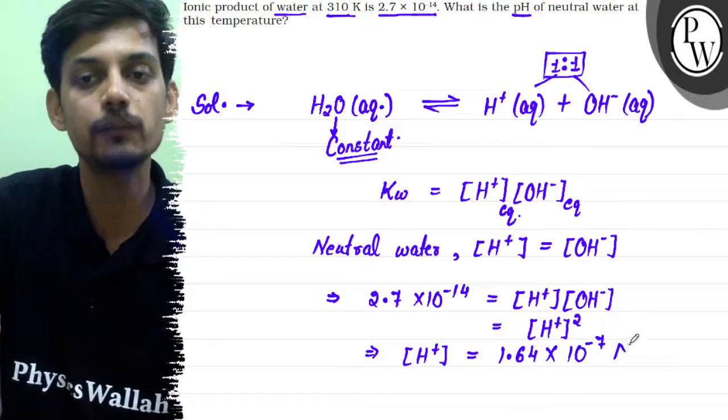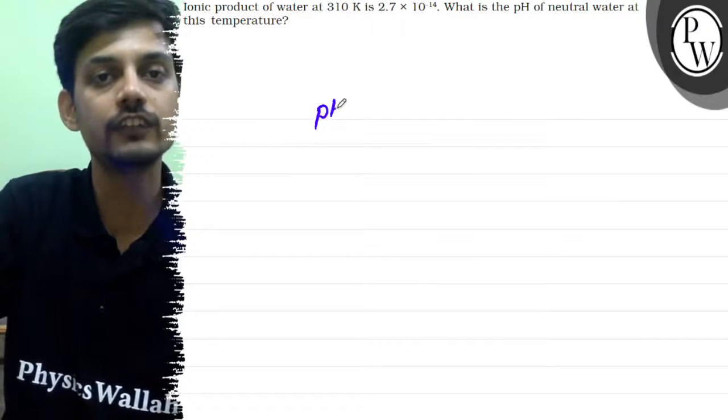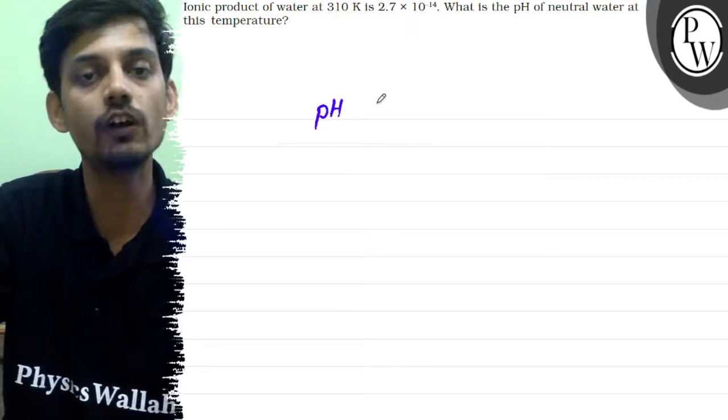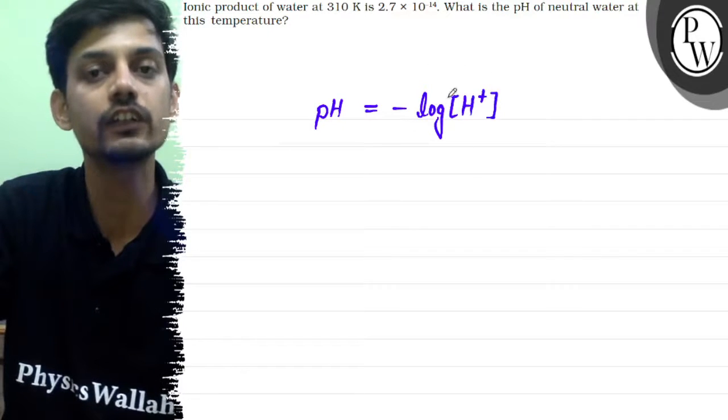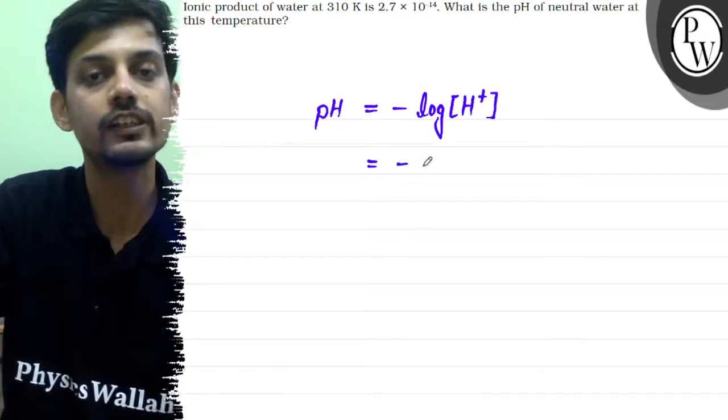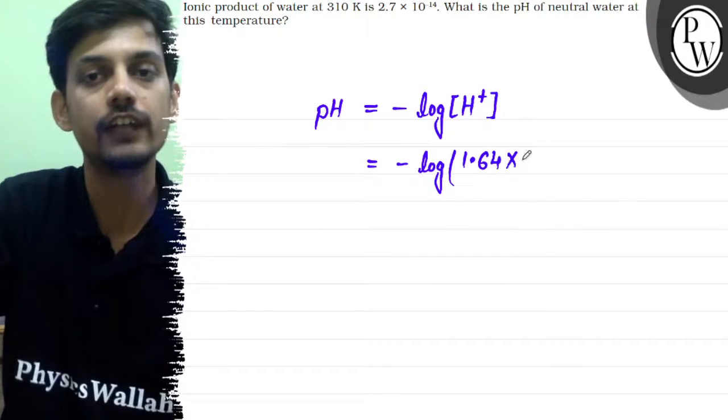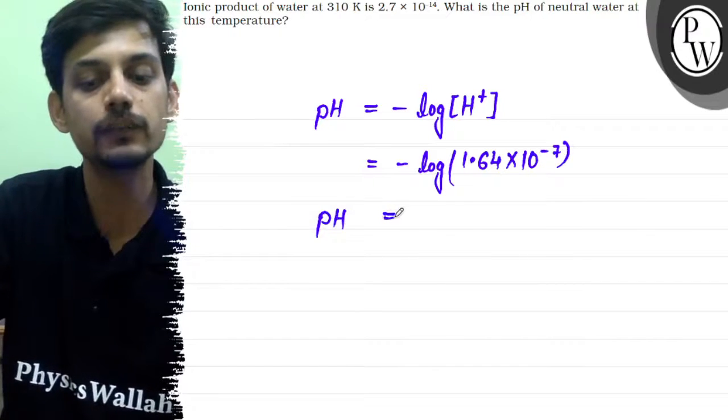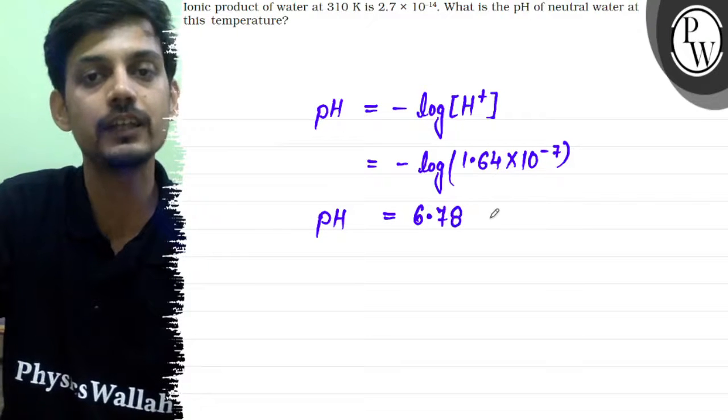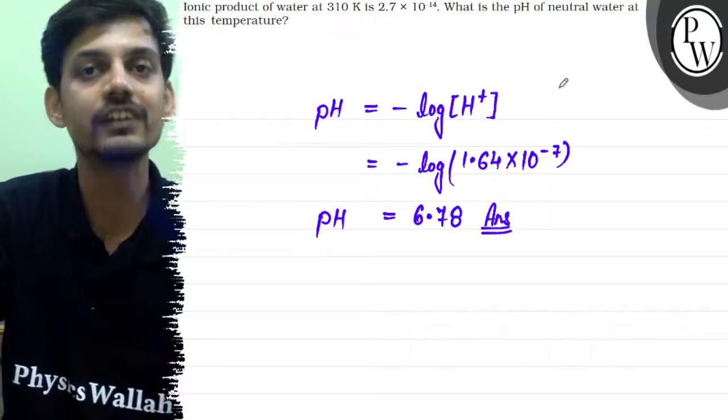Now we can find the pH. pH of any solution, whether acidic, basic, or neutral, is always defined as the minus log value of H+ ion concentration. The concentration of H+ ion was found to be 1.64 × 10^-7. So the pH of neutral water at the given condition will be 6.78. This will be the answer for the given question. Hope this clears the question. Best of luck, thank you.